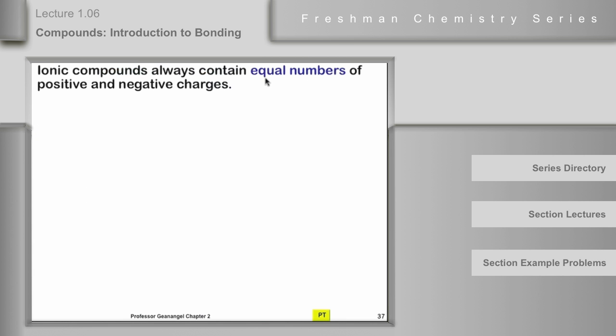In that regard, then it's not surprising to find that ionic compounds always contain equal numbers of positive and negative charges. They may not contain equal numbers of ions, but they will contain equal numbers of positive and negative charges, meaning the formula of the ionic compound, whatever that is,